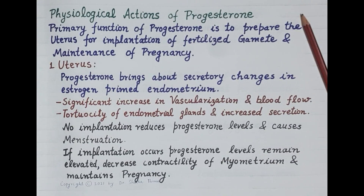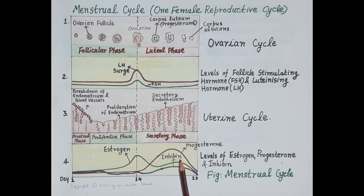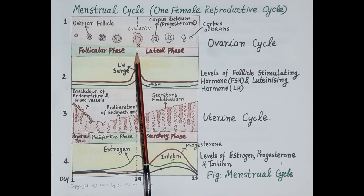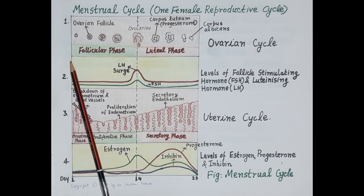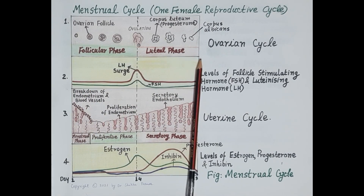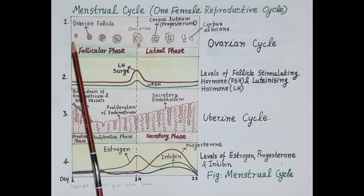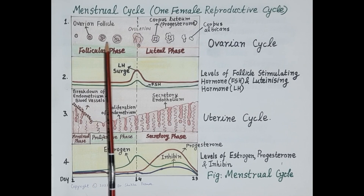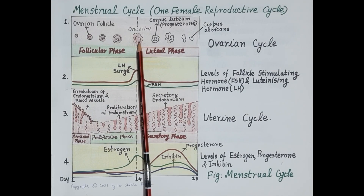This is the chart that depicts one menstrual cycle or one reproductive cycle. Look at figure 1. One reproductive cycle is 28 days, starting from day 1 to day 28. The ovary consists of immature ovarian follicles, and around one dominant follicle develops each month.